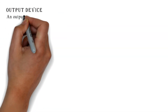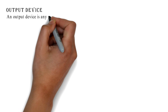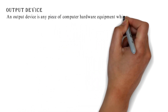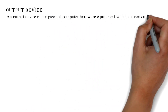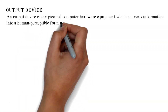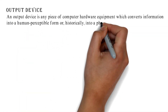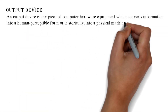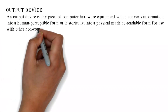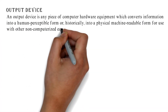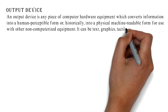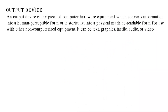Output Device. An output device is any piece of computer hardware equipment which converts information into a human-perceptible form, or historically, into a physical machine-readable form for use with other non-computerized equipment. It can be text, graphics, tactile, audio, or video.